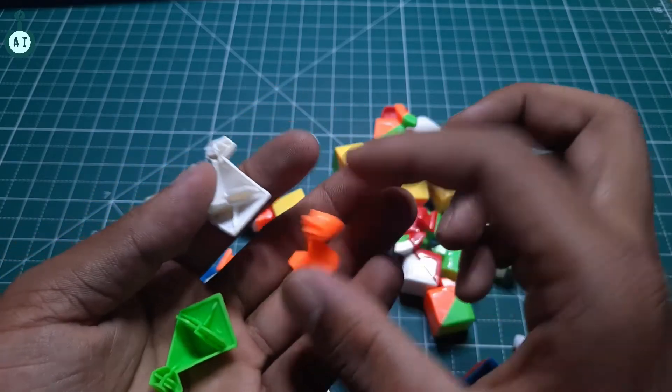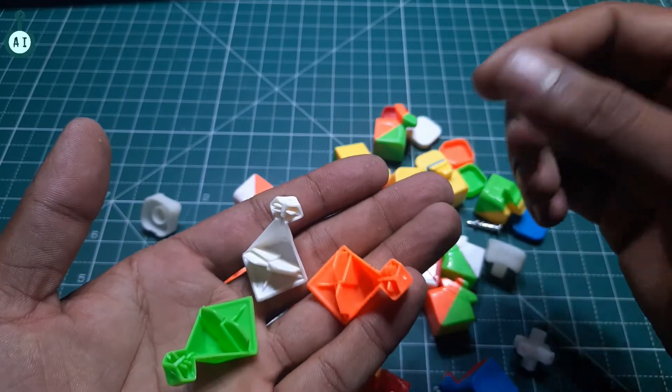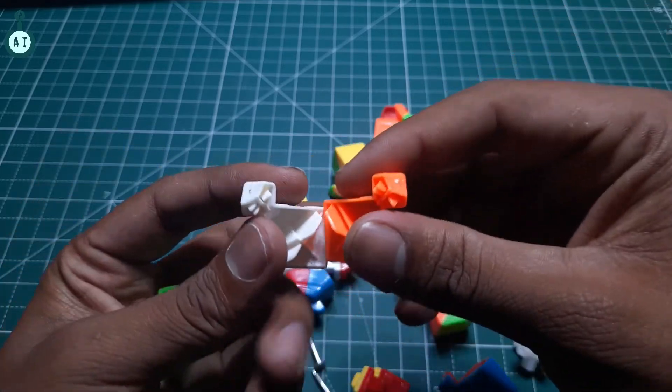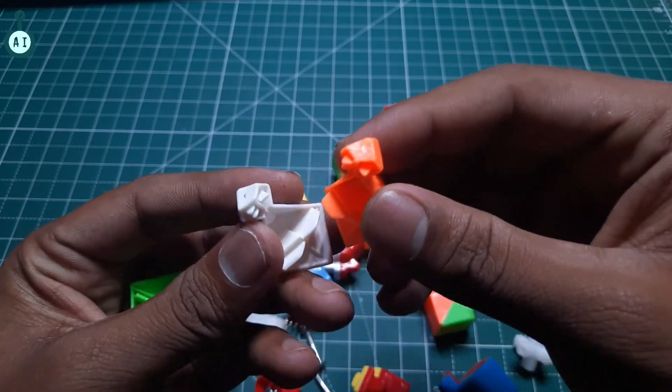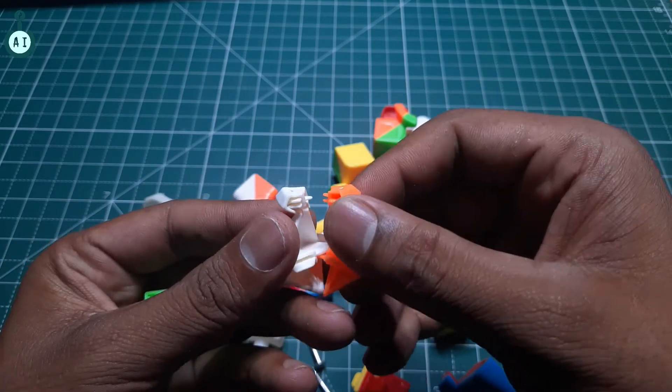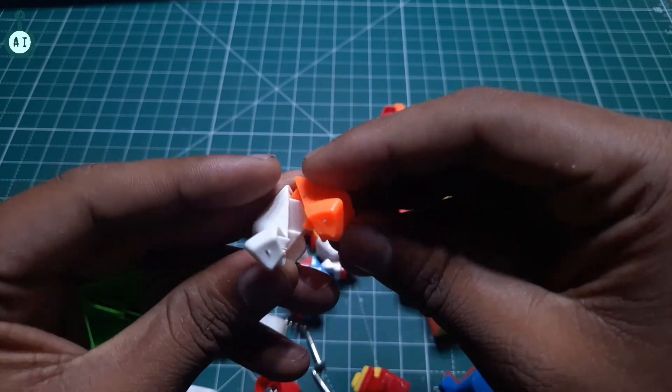This is the cube. If we are doing this, this is the corner piece.